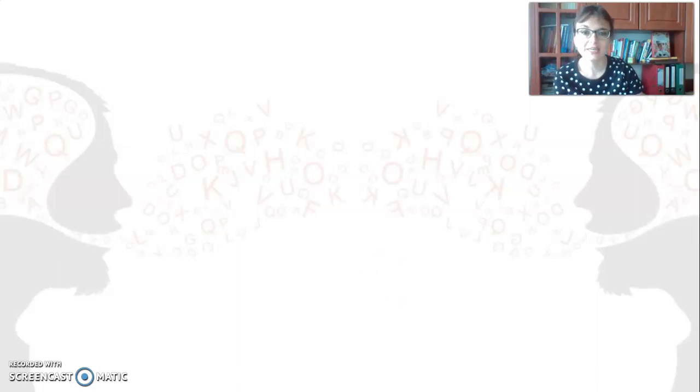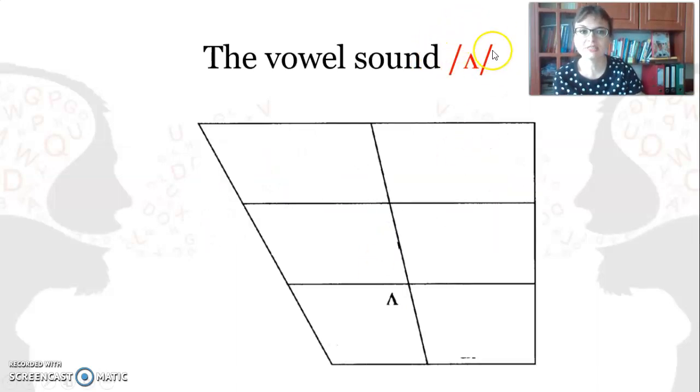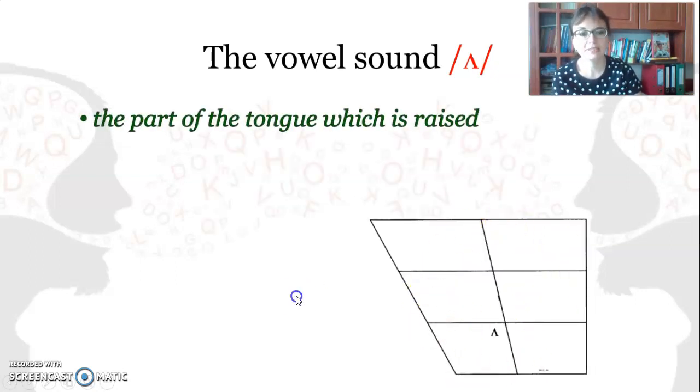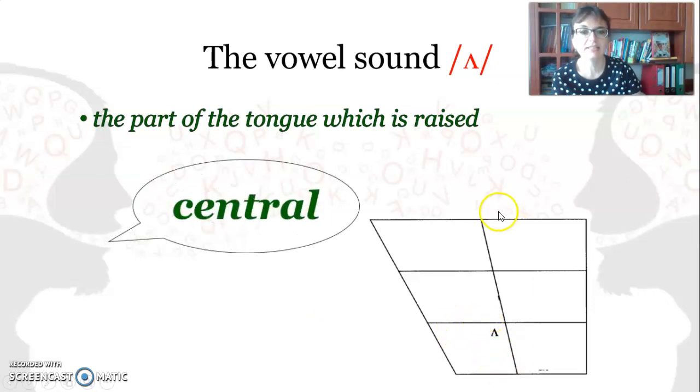Let's raise our awareness of the articulation of the sound in English. The vowel diagram indicates that this is a central sound in English, that is the central part of the tongue is slightly raised toward the palate.